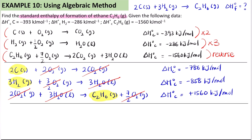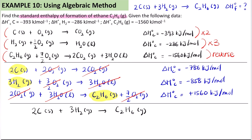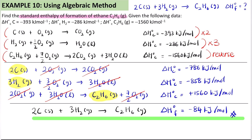Step 4: write the final equation properly. We get 2C(s) + 3H₂(g) → C₂H₆(g). Step 5: total up everything. So: −786 + (−858) + 1560, and you get the value for the standard enthalpy of formation. ΔH°f = −84 kJ/mol. You can see this equation matches the target equation. Make sure you write that it is the enthalpy of formation.